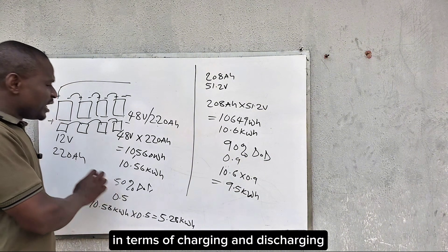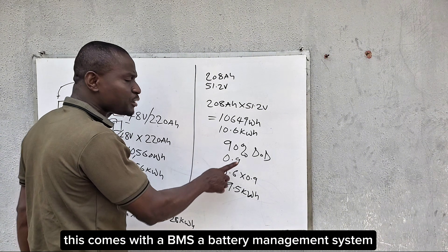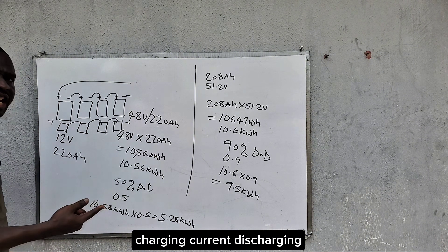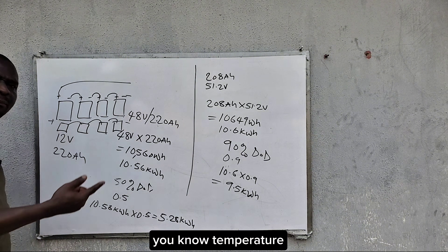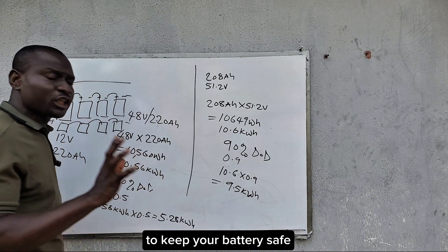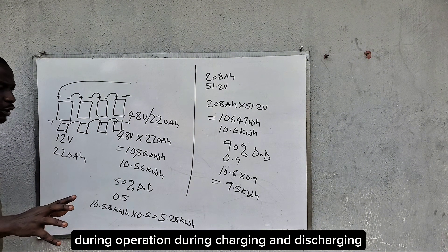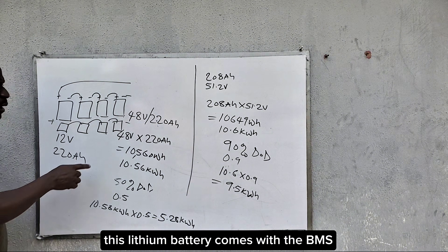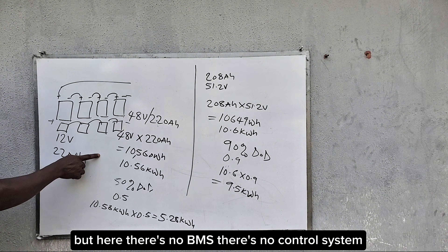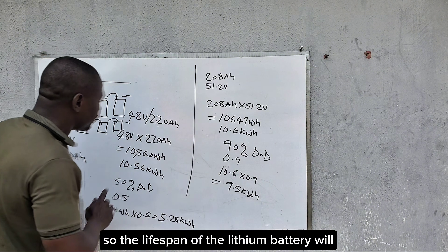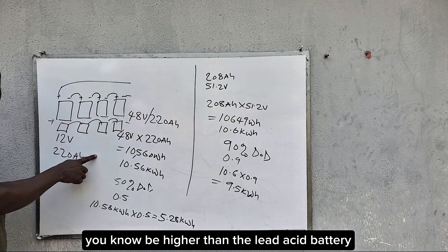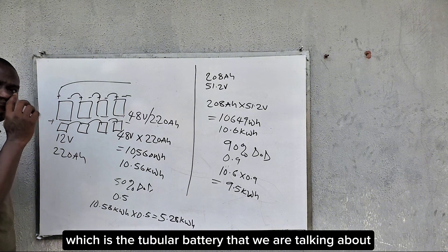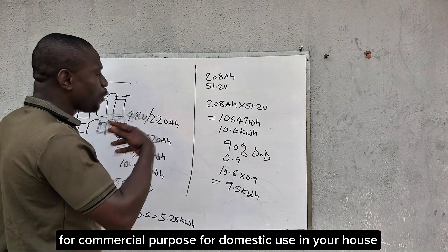The lithium battery comes with a BMS — a battery management system — to manage the charging voltage, charging current, discharging current, temperature, and all other things needed to keep the battery safe during operation. But for the lead acid tubular batteries, there is no BMS and no control system. So the lifespan of the lithium battery will be higher than the lead acid battery.